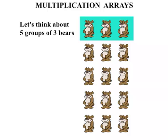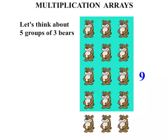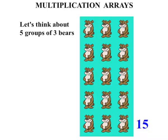We have three so far. Another three makes six. Another three makes nine. Another three makes twelve. Another three makes fifteen. So five groups of three bears total fifteen bears.